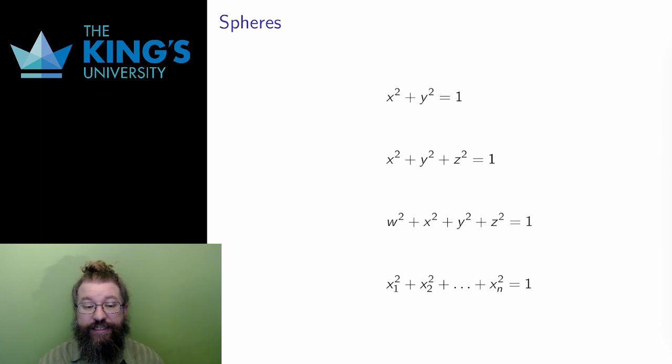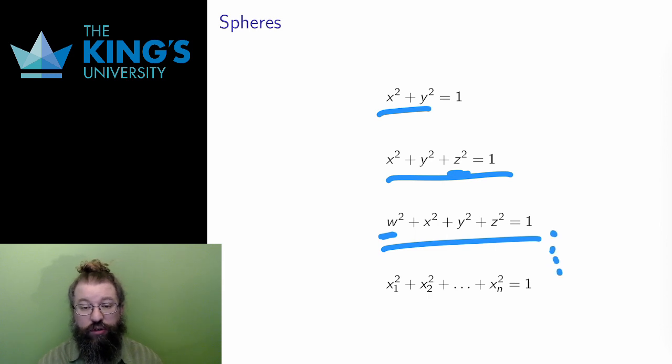Then, to actually access this, I have equations. To go up one dimension, I just need to add a new squared variable to the equation. The sphere in R4 has equation w squared plus x squared plus y squared plus z squared equals 1, because w, x, y, and z are the coordinate variables for R4. I can do this in any dimension. The sphere in Rn has equation x1 squared plus x2 squared plus so on, all the way to xn squared equals 1. The squares of all the coordinates added together.